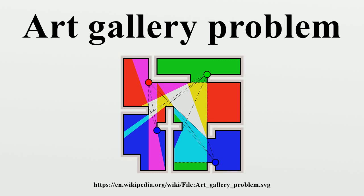Chvátal's proof was later simplified by Steve Fisk via a three-coloring argument. Fisk proves the art gallery theorem as follows: first, the polygon is triangulated. The vertices of the polygon are then three-colored in such a way that every triangle has all three colors.